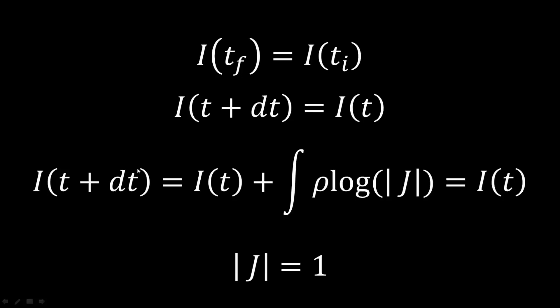And the information entropy at the next time step is going to be the initial entropy plus the integral of rho times the logarithm of the Jacobian. And this of course needs to be equal to the initial entropy. So what we want is this integral to be zero for any distribution of rho. So we want the logarithm of the Jacobian to be zero, which means we want the Jacobian to be one, which is exactly the same condition that we found when we were talking about measurement.